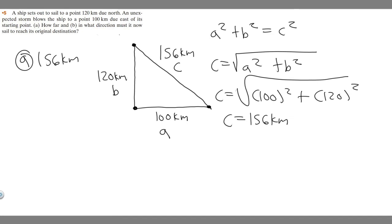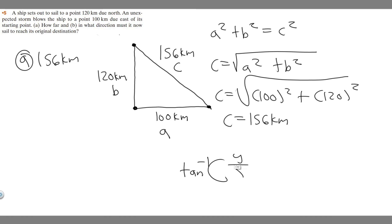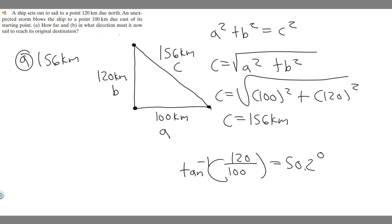Now we're trying to find in what direction must it now sail to reach where it planned to go. The way we're going to do that is by finding this angle, and the way you do that is by taking the arctangent. You want to do the arctangent of your y component over your x component. The distance in the y direction we know is 120, and the distance in the x direction is 100. So arctangent of 120 over 100 equals 50.1944 and so on — I'm going to round to the tenths place, so 50.2 degrees. This angle right here is 50.2 degrees.